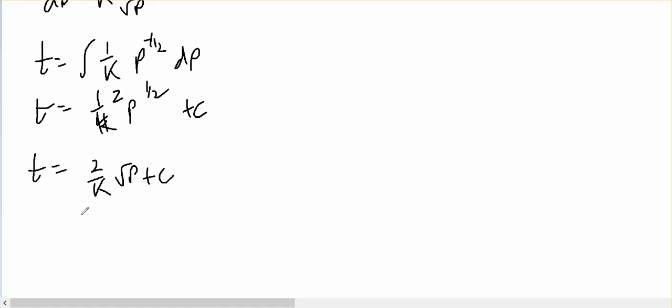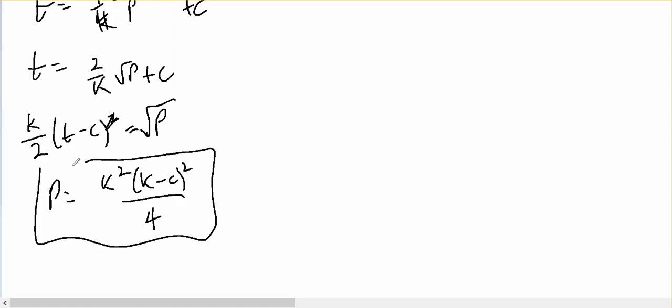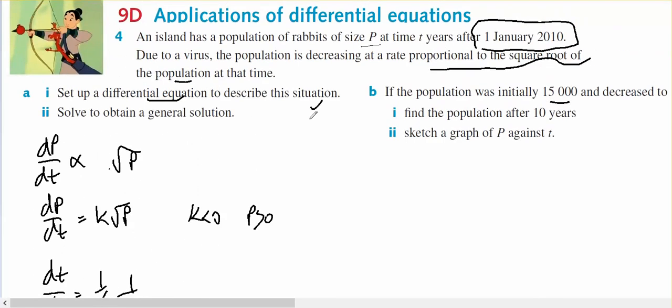Or I can say that t minus c squared equals square root of p. P equals k squared over 4, t minus c squared, as being the general solution. So that's part a and part b done.